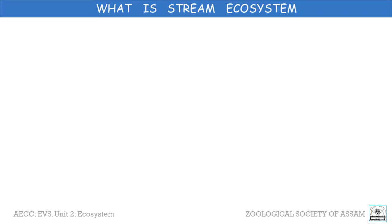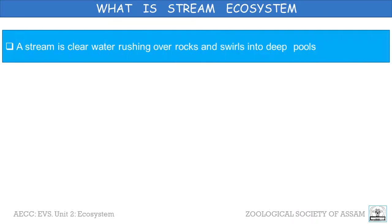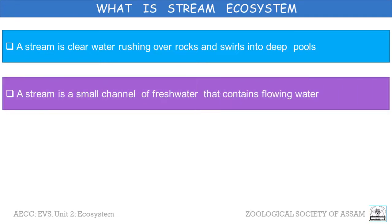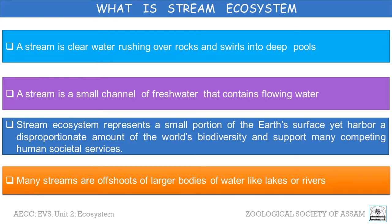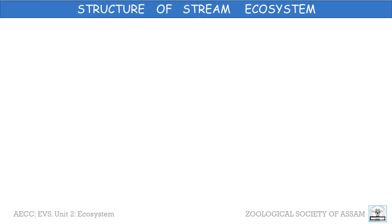A stream is clear water rushing over rocks and soils into deep pools. Although water looks empty, it is not — a stream is home to many plants and animals, and many more live along its banks. A stream generally flows through forest. A stream is a general term for a small channel of fresh water that contains flowing water. Stream ecosystems represent a small portion of Earth's surface, yet harbor a disproportionate amount of the world's biodiversity and support many competing human societal services. Many streams are offshoots of larger bodies of water like lakes or rivers.